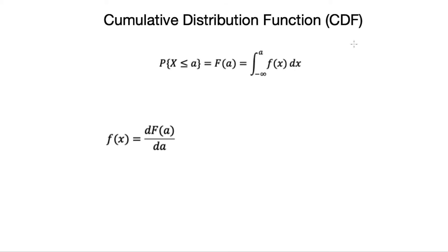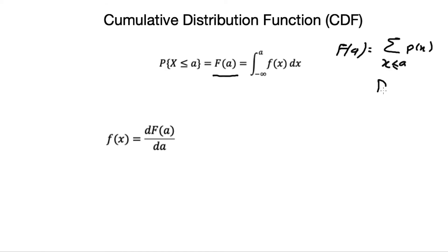We will also discuss the cumulative distribution function, or CDF, for continuous random variables. The CDF F(a) is defined as P(X ≤ a), which equals the integral from negative infinity to a of f(x) dx. In the discrete case, F(a) was a summation of p(x) over all x ≤ a. In the continuous case, we use the integral. It follows that f(x) is the derivative of F(a) with respect to a, so we can recover the PDF from the CDF.